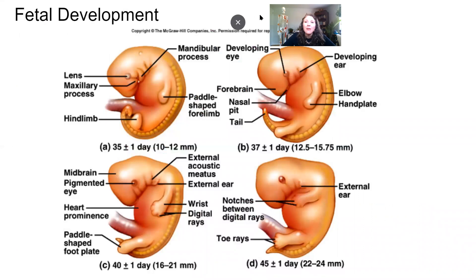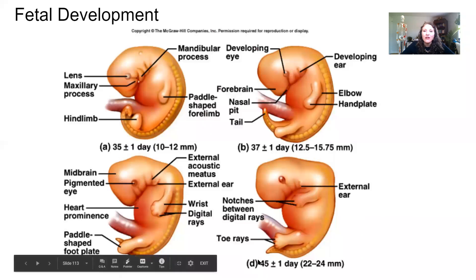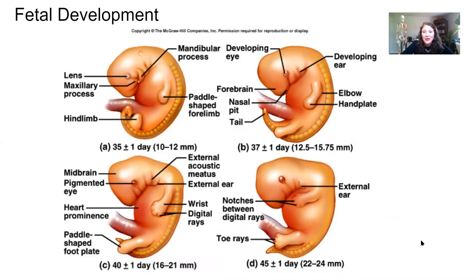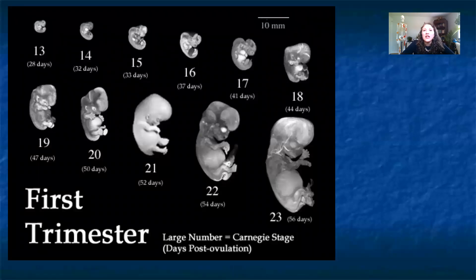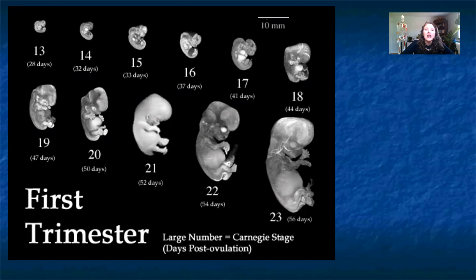Fetal development takes place from day 35 to day 45 — just 10 days — during which we can see the beginning development of the jaw and ear. We go from having paddle-shaped forelimbs to having limbs with actual digits and little hands. There is also a tail at this stage, but it will eventually shrink and combine into our sacrum and coccyx at the very end of the vertebrae. The larger numbers — 13, 14, 15 — are called Carnegie stages. The first trimester is roughly the first 13 to 14 weeks. In those short weeks, we go from just a tiny nugget of a fetus to a full-blown fetus with fingers and toes.